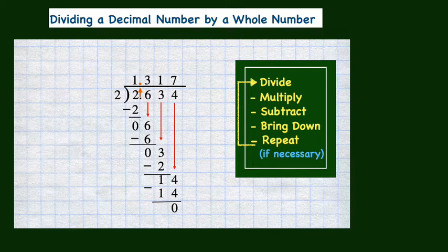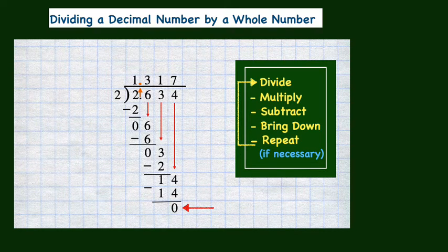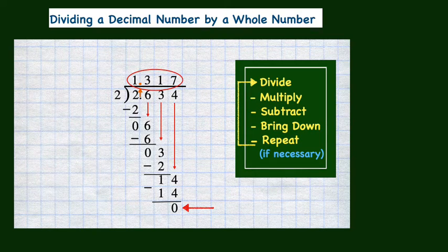We will not bring down another digit for two reasons. The first reason is that there are no more digits in the dividend to bring down. The second reason is that we have a zero remainder. Remember, when dividing with decimal numbers, the division process keeps repeating until you have a zero remainder or a repeating pattern of one or more digits. So the decimal number 2.634 divided by 2 is 1 and 317 thousandths.